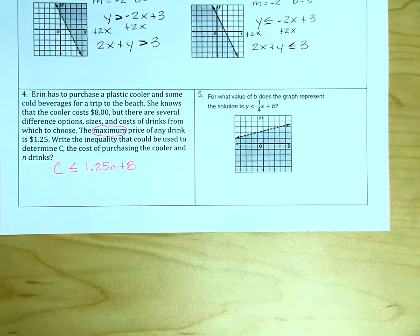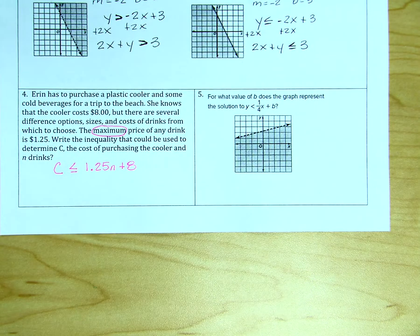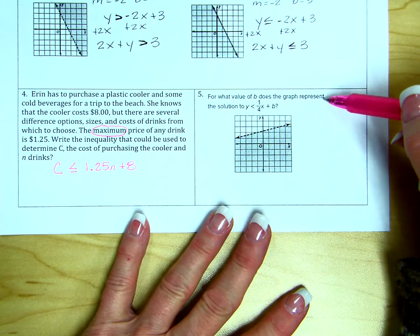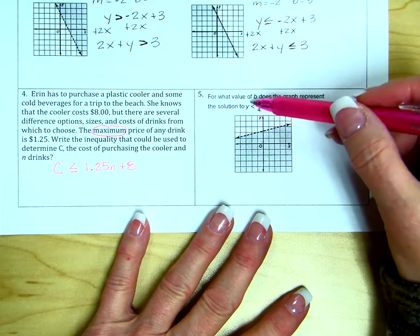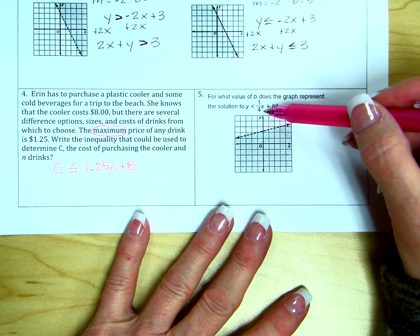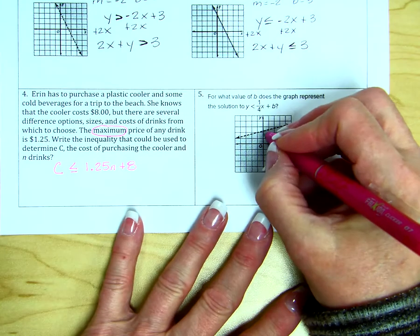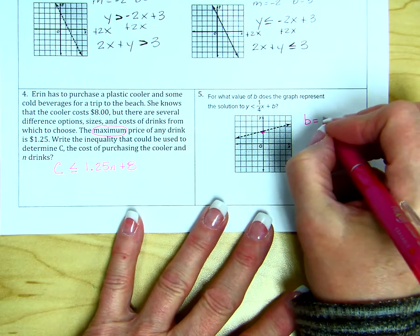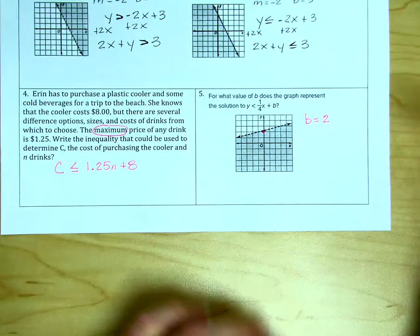So, for number 5, this will be the last one for this part of the review. It says, for what value of B does the graph represent the solution? Y is less than one-fourth x plus B. Well, B is our y-intercept. So, in this case, B would be 2.